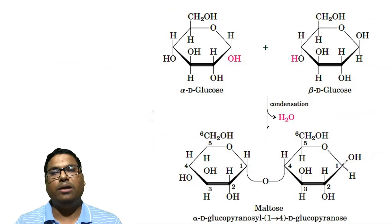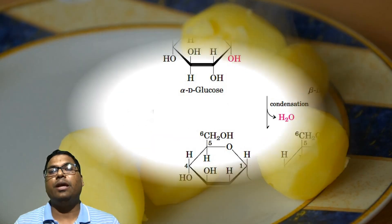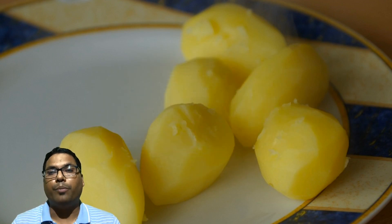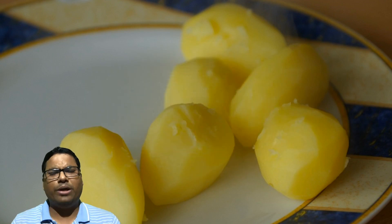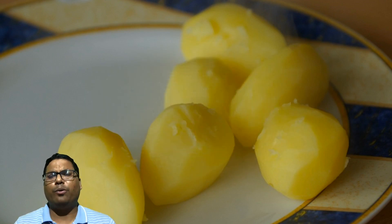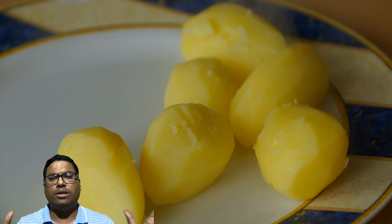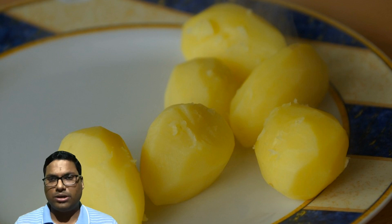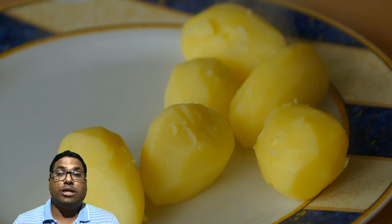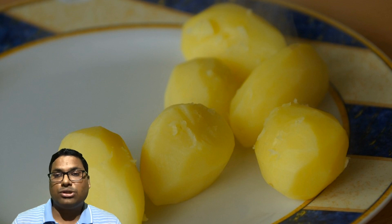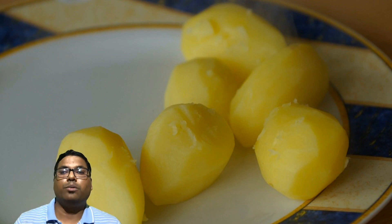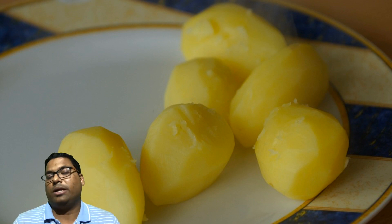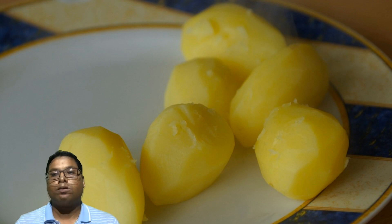Now where do we find maltose? It is present in boiled potatoes. When you eat boiled potatoes, the layers surrounding the boiled potato that come off are nothing but hydrolyzed starch sugar from the potato, and you are actually eating the outer layer of maltose.